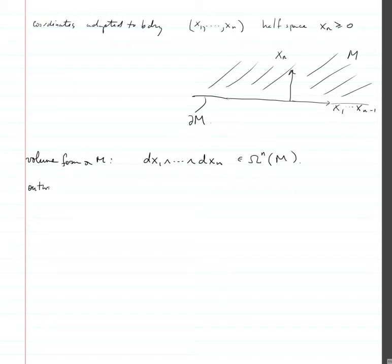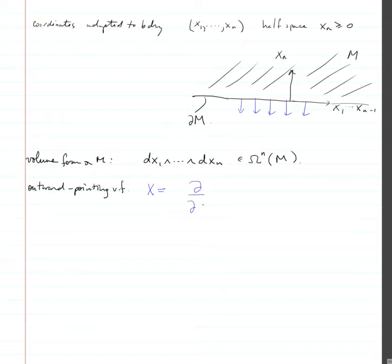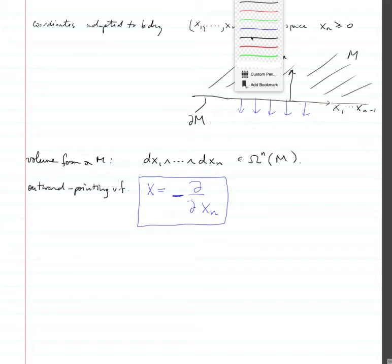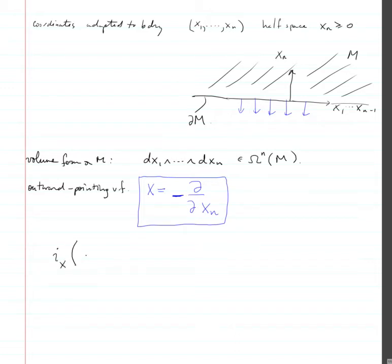An outward-pointing vector field would be a vector field pointing outwards. So x could be ∂/∂xn, but ∂/∂xn is pointing up, so it would have to be minus ∂/∂xn. And then what I could do is take the interior product of x.